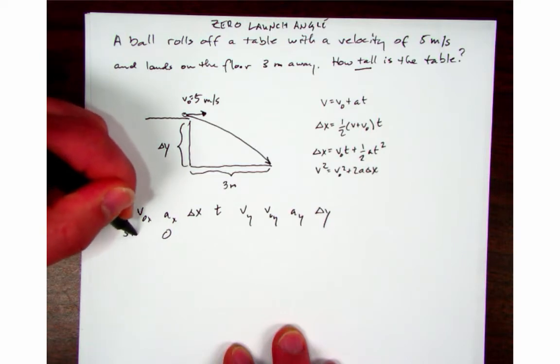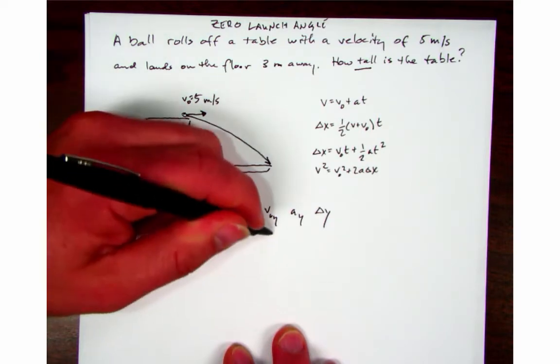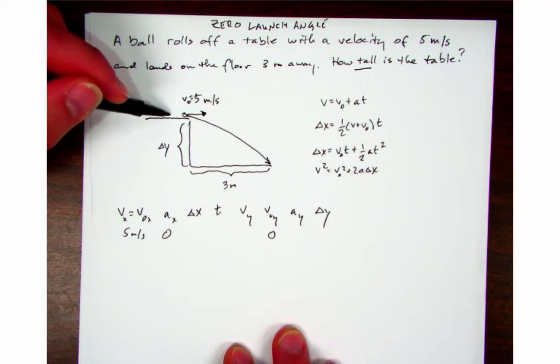Therefore v naught x and v_x are going to be the same and they're going to be five meters per second. And v naught y is zero. The ball had no vertical velocity as it was rolling to the edge of the table.